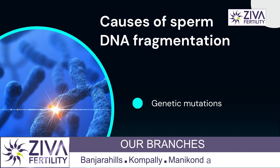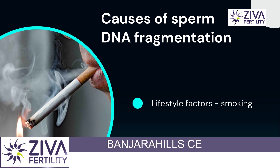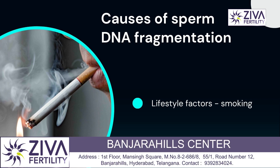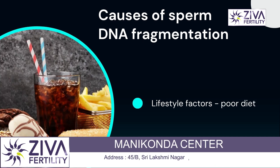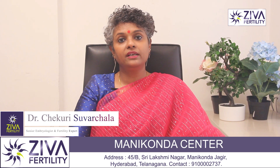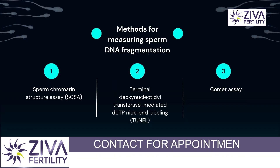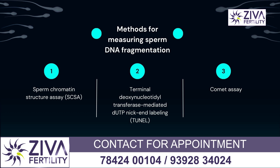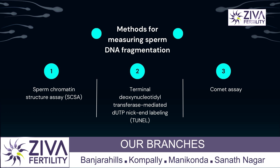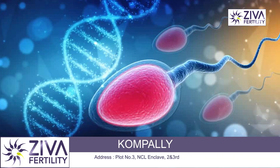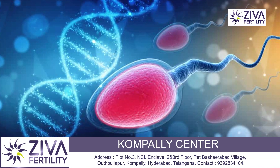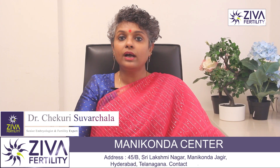It can also be influenced by lifestyle factors such as smoking, excessive alcohol consumption and a very poor diet. There are several methods for measuring sperm DNA fragmentation including the SCSA, also called the sperm chromatin structure assay, or the TUNEL test and comet assay. These tests use different techniques to identify DNA breaks in sperm cells and can provide valuable information for assessing male fertility.